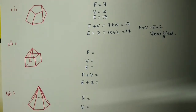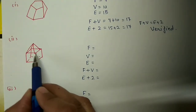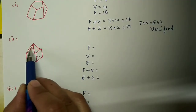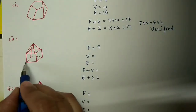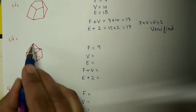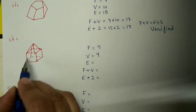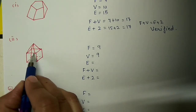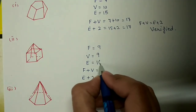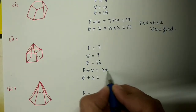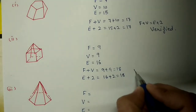Now we will check for the second figure, which is a combination of a prism and pyramid. Faces: one, two, three, four, five, six, seven, eight faces plus one base - total nine faces. Vertices: one through eight and one top - nine vertices. Edges: counting gives sixteen edges. Substituting: 9 plus 9 equals 18, and 16 plus 2 equals 18. So this one is also verified.